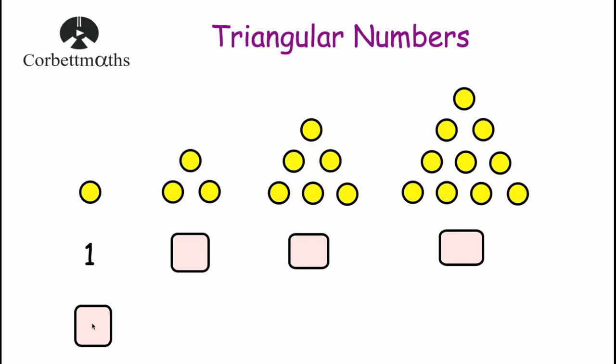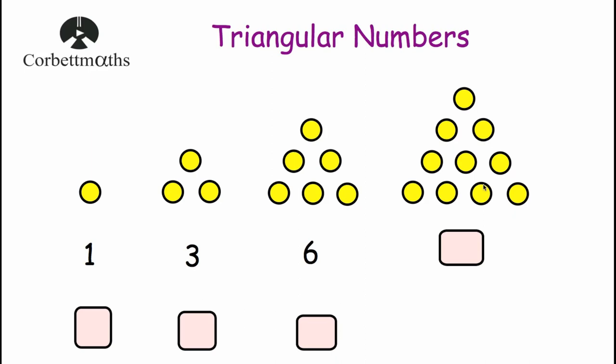We'll start by looking at this visual pattern. We've got one dot here. And then we've got three dots, and it makes a triangle - one, two, three. And then we've got a bigger triangle, but the base of this triangle, instead of being two, it's now three, so we've added on three dots beneath, so there are six dots there.